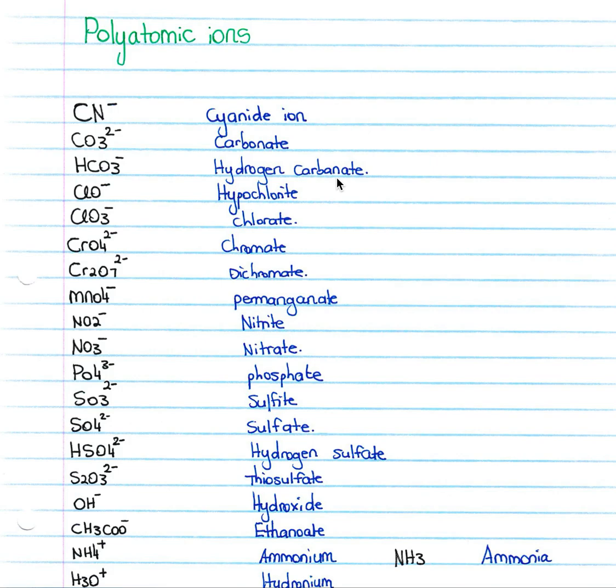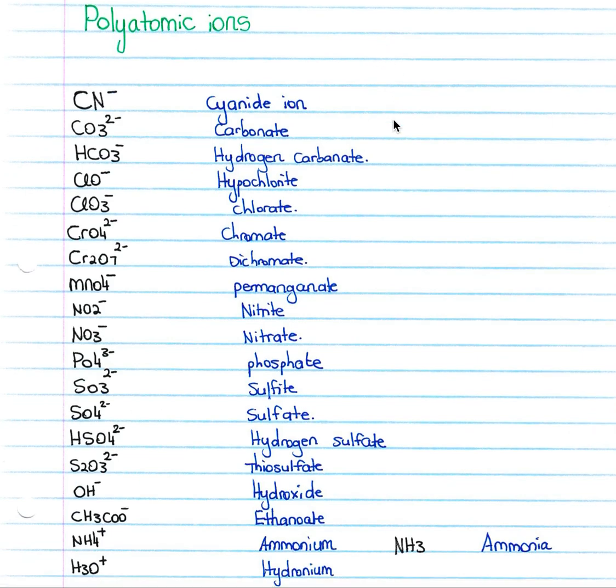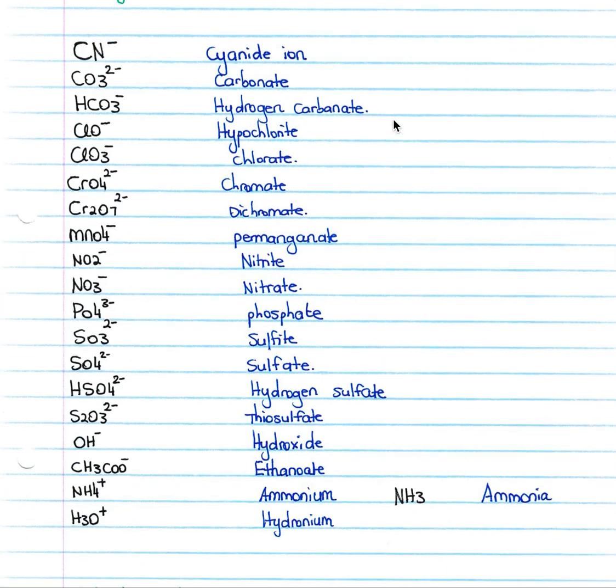That fall under quantitative chem. So firstly, you need to know your polyatomic ions off by heart. This is a list of the polyatomic ions that you need to know. You need to know their chemical formula and you need to know what the chemical formula stands for in the naming.